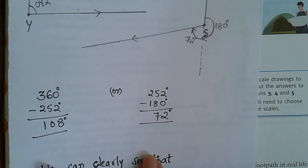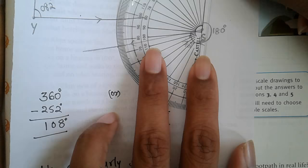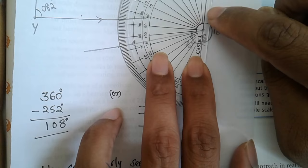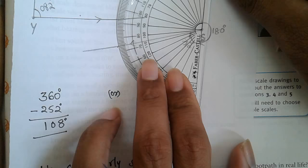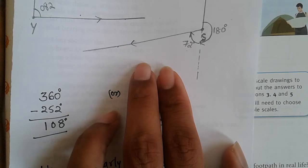So you can mark 108 degrees in anticlockwise direction. Place your protractor here and then count from 0 taking north as base: 0, 10, 20, 30, 40, 50, 60, 70, 80, 90, 100, and then 108 degrees.